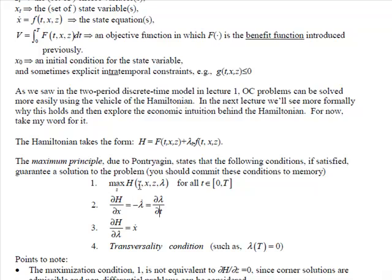The first optimization criterion is that we maximize the Hamiltonian with respect to our choice variables. The second is that when we take the derivative of the Hamiltonian with respect to the state variable, we get minus the differential equation with respect to the co-state variable.